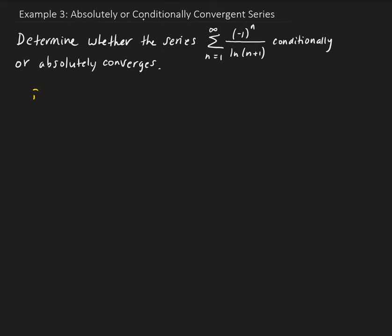We're going to take the limit of the nth term, the nth term being 1 over natural log of n plus 1. Since natural log is an increasing function, as n goes to infinity, the denominator will go to infinity. Therefore, this limit is going to approach 0.